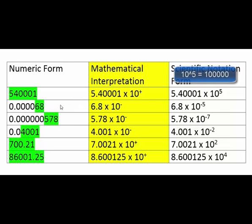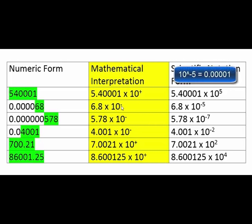Next case: .00068. I highlighted 6.8, so we extract that as the coefficient. How many places was the decimal moved to get 6.8? 1, 2, 3, 4, 5. Is it going to be a negative or a positive 5? This mathematical operation needs to equal a puny number, so it needs to be a negative exponential — negative 5.